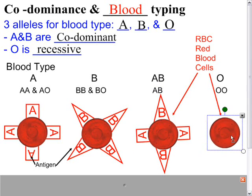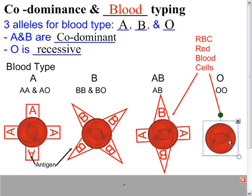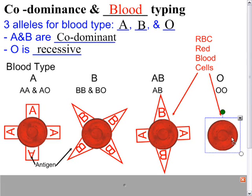Type O refers to a lack of any antigen whatsoever. Type O blood has no antigens — the blood cells are clean.